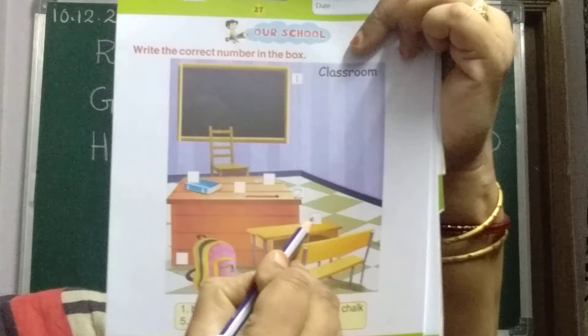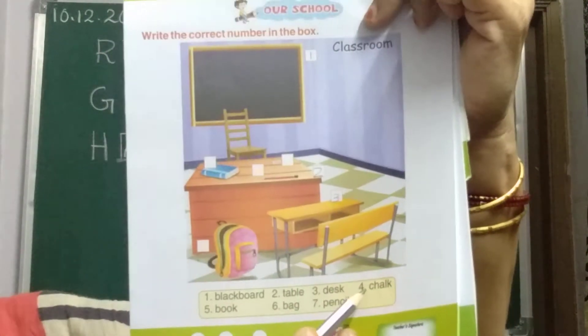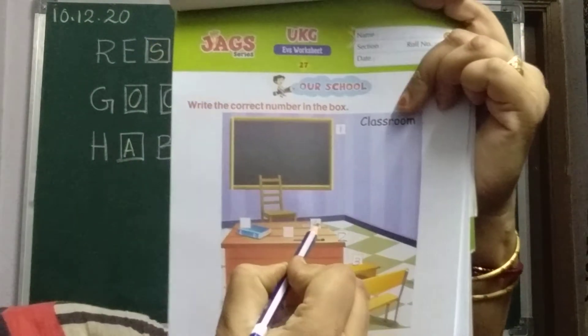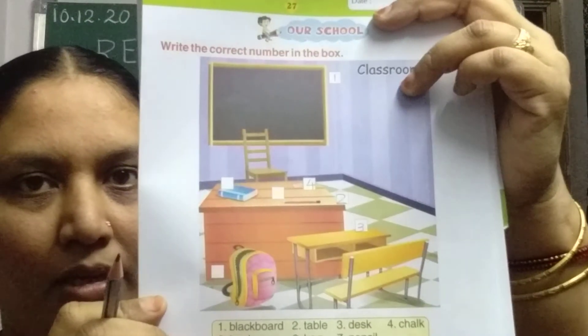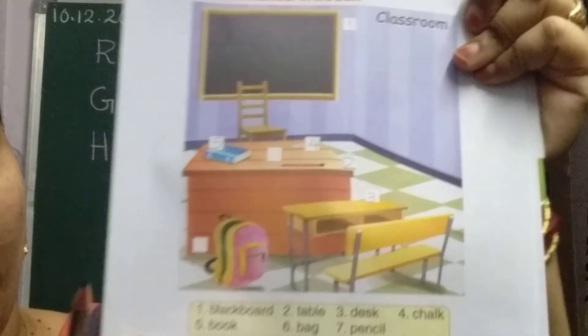Then, number 4 is chalk. Where is the chalk? On the table. Number 4. Number 5 is book. Where is the book? On the table. Yes, number 5.